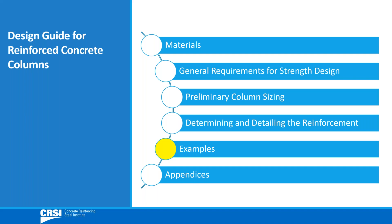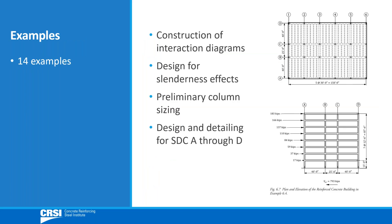Chapter 6 contains examples that illustrate the proper application of the code provisions and the use of the design aids in the previous chapters. Fourteen examples are provided that cover construction of interaction diagrams, design for slenderness effects, preliminary column sizing, and comprehensive design and detailing for columns in buildings assigned to seismic design categories A through D.